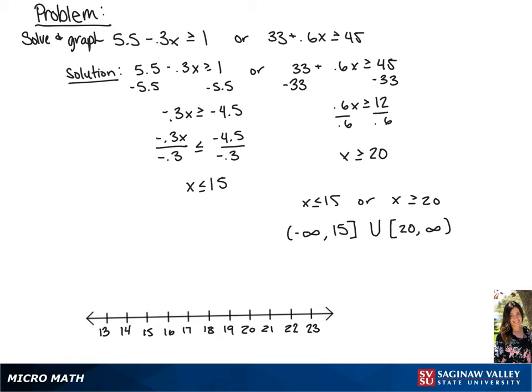Now, to graph the solution, we're going to draw a closed circle around 15 and an arrow going to negative infinity, which will be to the left, and a closed circle around 20 and an arrow going to the right, or to positive infinity.